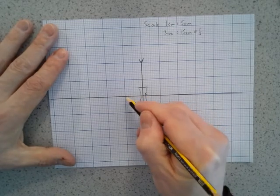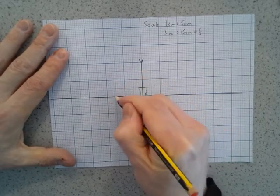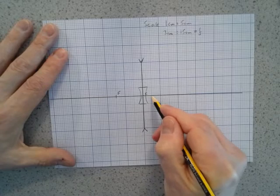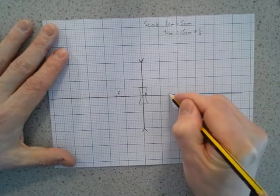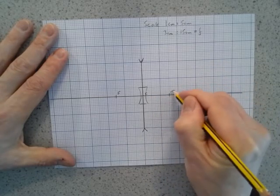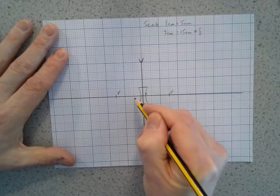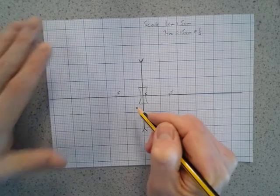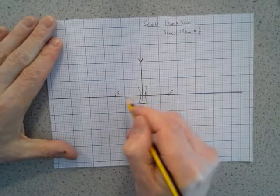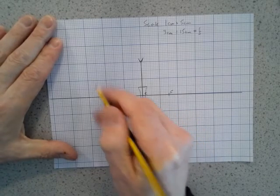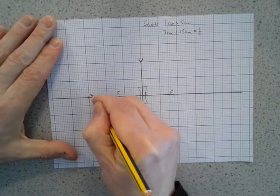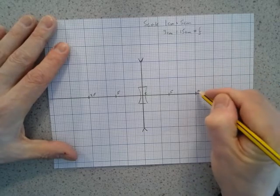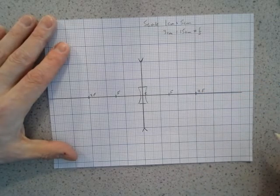If we count out, that's 5, 10, 15 centimeters to scale. The principal focus is here and the same on the other side, 5, 10, 15 centimeters. If we keep going we can also mark 2f on this lens as well. So 5, 10, 15, 20, 25, 30, 2f is here, and 2f is on the other side as well.